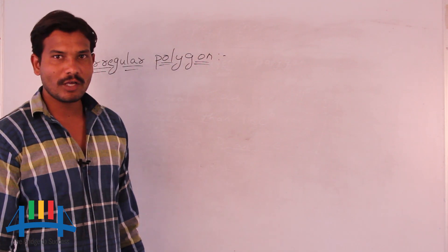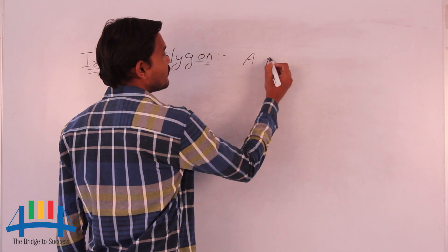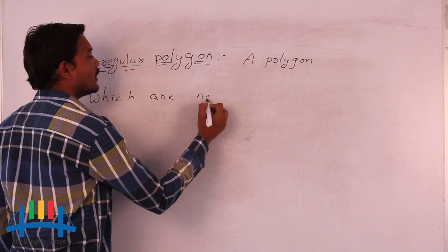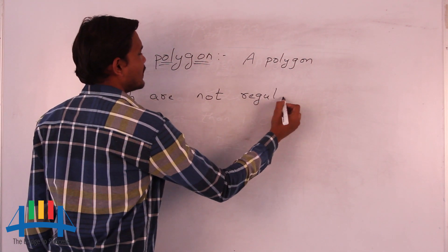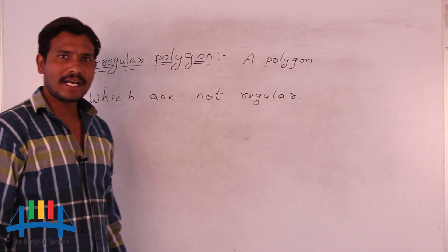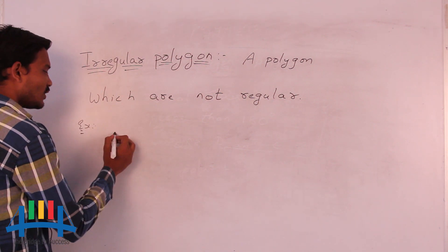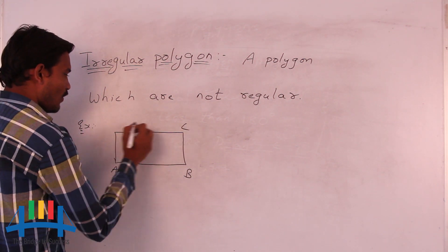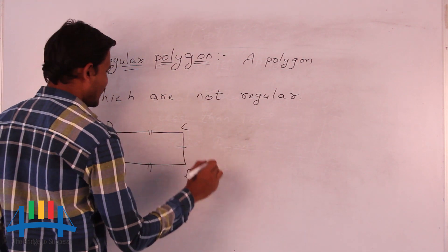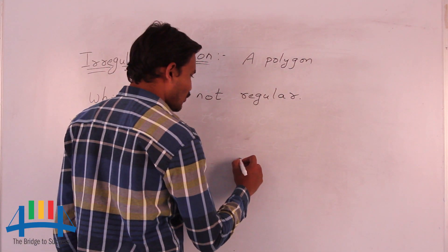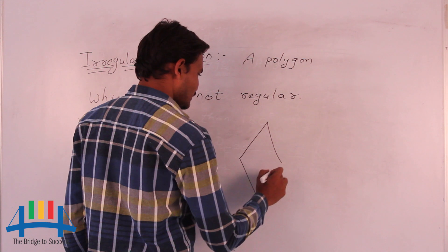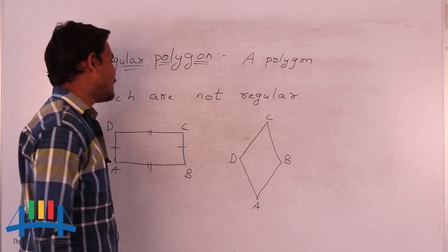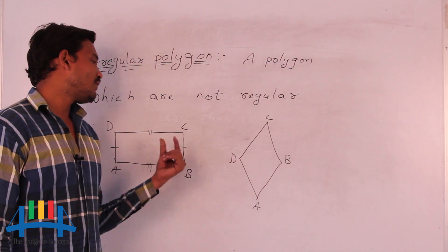Now we will learn about the irregular polygon. An irregular polygon is a polygon which is not regular. An example of an irregular polygon is a rectangle, where only opposite sides are equal. Another example is a rhombus. Both are examples of irregular polygons — shapes that are not regular.